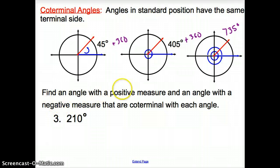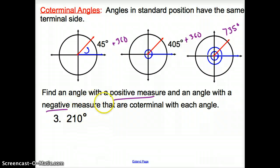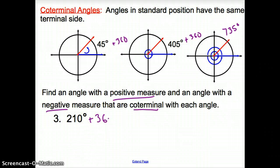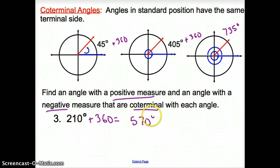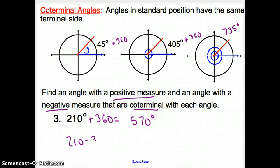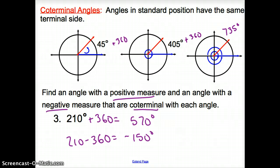Now we are asked to find an angle with a positive measure and an angle with a negative measure coterminal to 210 degrees. To find the positive coterminal angle, we add 360 degrees, giving us 570 degrees. To find the negative coterminal angle, we subtract 360 degrees — you can subtract it more than once if needed. When we subtract 360, we get negative 150 degrees.